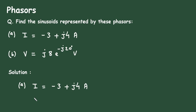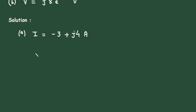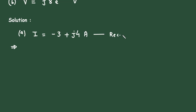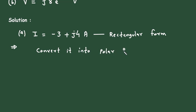We have to convert it into its equivalent sinusoid. The solution: I(t) equals — but before converting this into time domain format, we first need to convert this into its equivalent polar form. This is the rectangular form, so we convert it into its equivalent polar form.